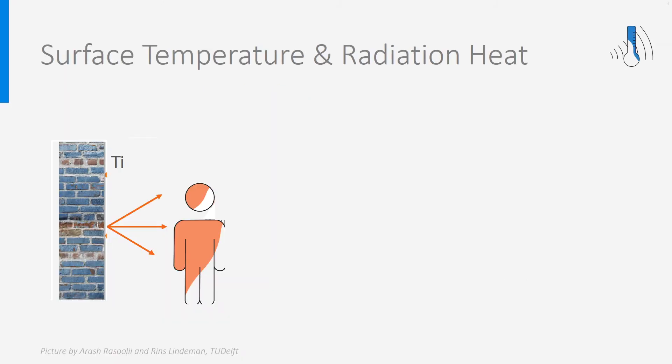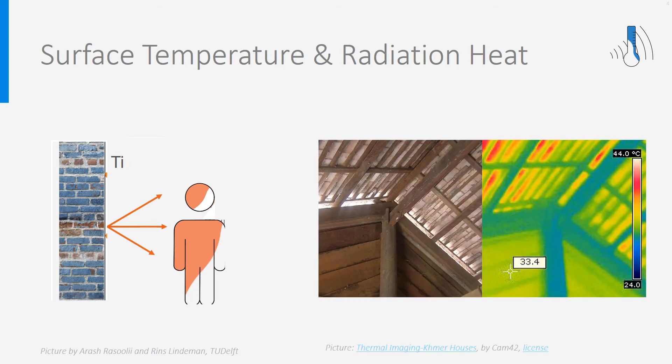In the same way that the human body can feel solar radiation, it can feel infrared radiation from every surface having a temperature Ti different from the skin temperature. On this picture, you see an example of different temperatures on different parts of a construction obtained by thermal imaging. It is not only a feeling — there is a real heat exchange and it is called radiative heat transfer.